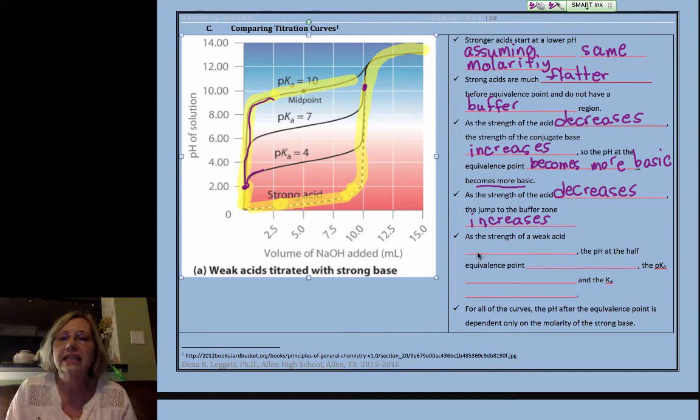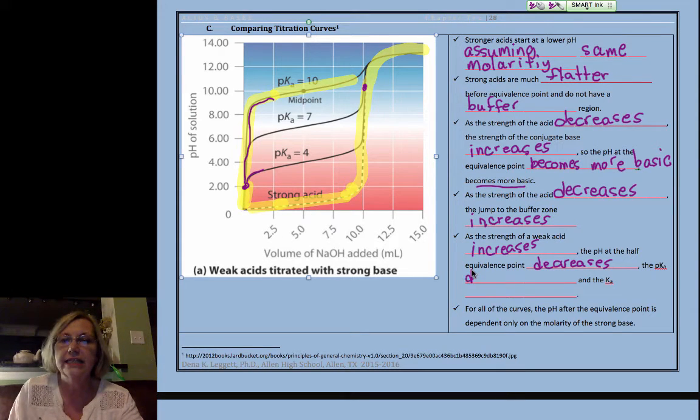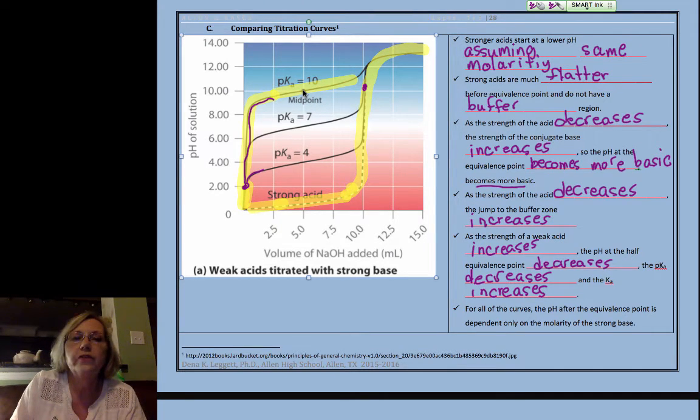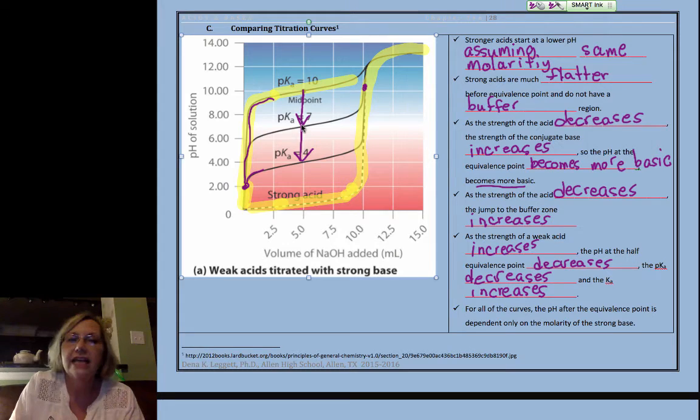As the strength of the weak acid increases, the pH at the half-equivalence point decreases. The pKa decreases, and the Ka increases. Remember, they're inversely proportional because it's the negative log. So, here's my half-equivalence point, as I go from weaker to stronger, the pH at that half-equivalence point decreases, and that's because my Ka is larger.